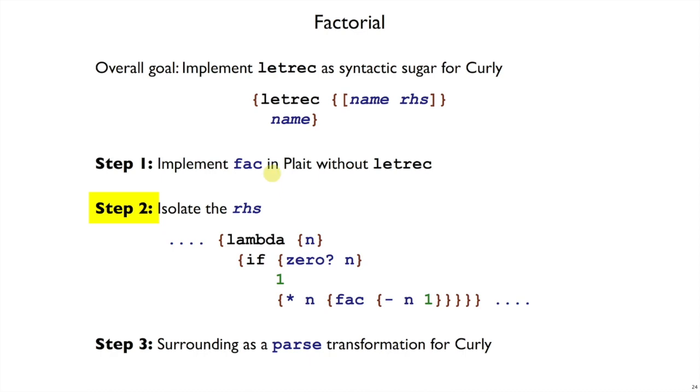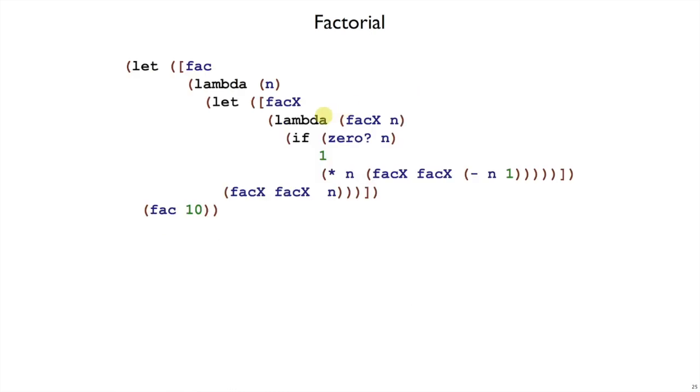Now we're on step two, where we're going to take our implementation of FAC in untyped Plait and rearrange it so that we have literally this pattern right here inside the code. We don't have that pattern right now, but we want literally this pattern because we want to allow that on the right-hand side of our encoding. We don't have literally that right now. We have something close, but it has this extra FACX argument, and where we want a recursive call to FAC, we have this self-application.